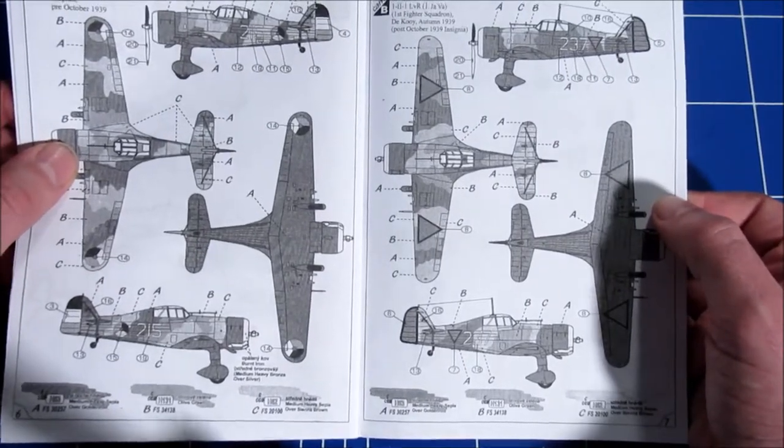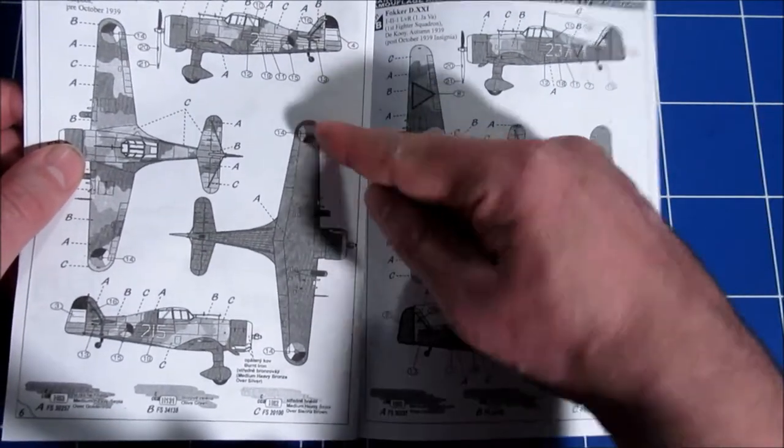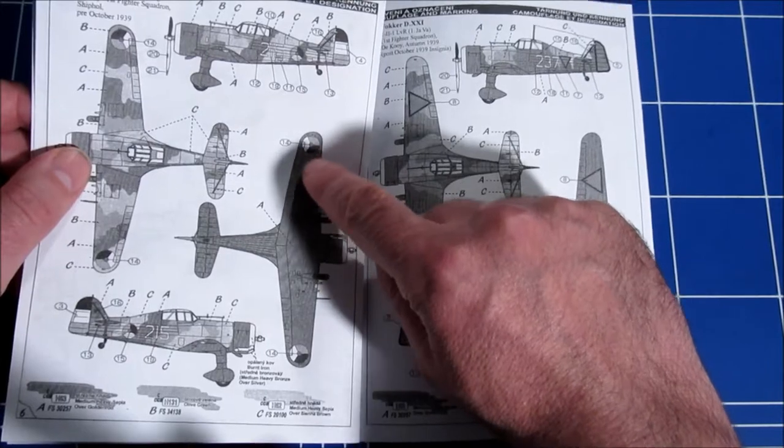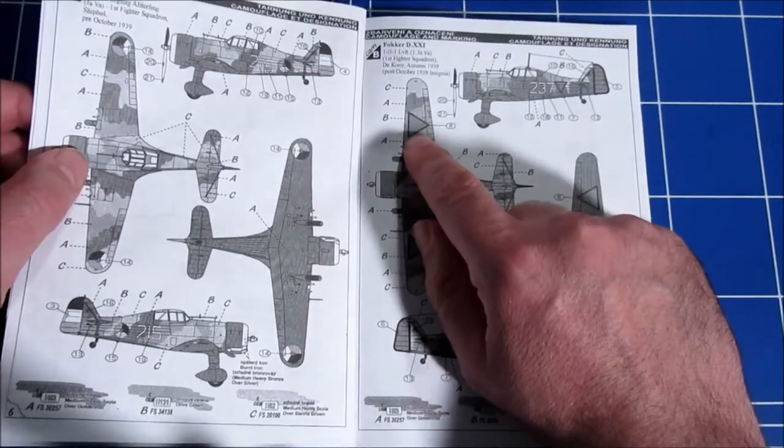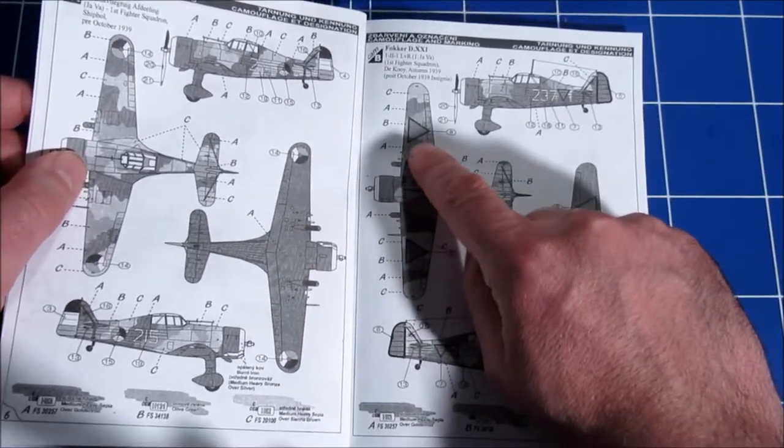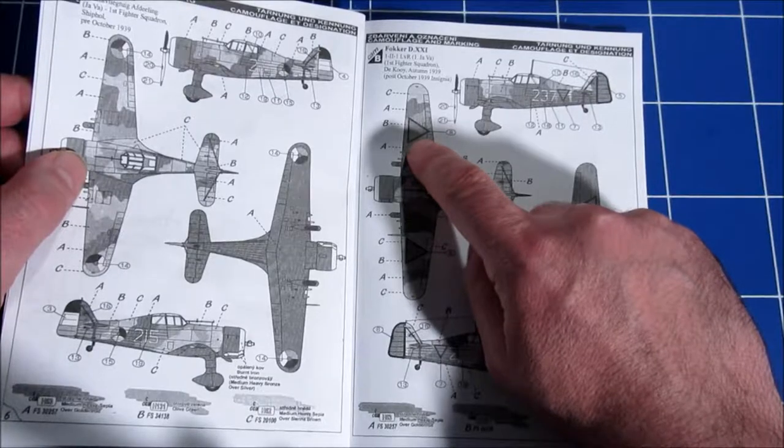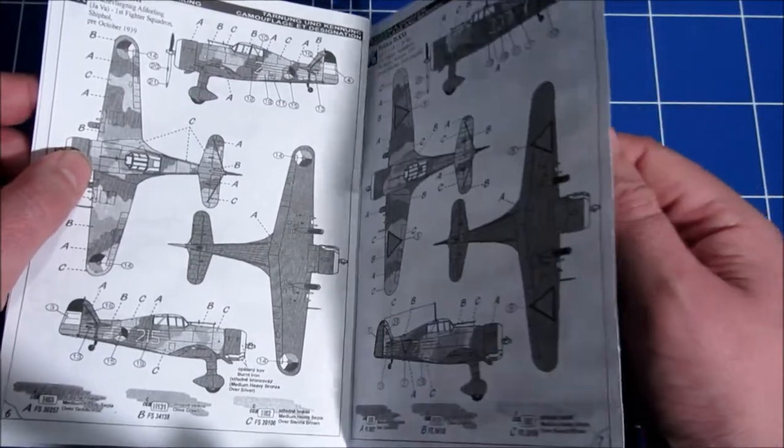And here some color schemes, the pre-war ones with the pre-war roundels and the orange triangles from the mobilization period and the Second World War in 1940.